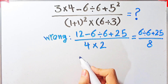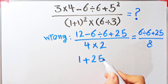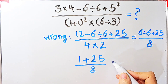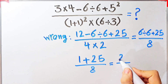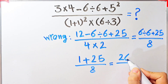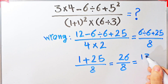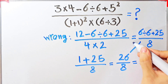Six divided by six equals one, one plus twenty-five then divided by eight. One plus twenty-five equals twenty-six, so they say the final answer equals twenty-six over eight. They divide both by two and say the final answer is thirteen over four — but this answer is definitely wrong.